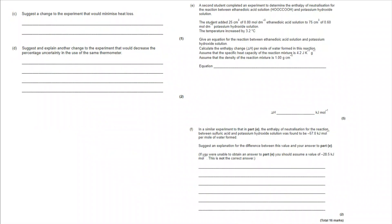Moving on with the rest of the question, suggest a change to the experiment that would minimise heat loss. Now, with anything like this, you're going to be thinking of insulation. It might be you're going to use a polystyrene cup instead of a glass beaker. You might talk about using a lid. Both of those do the same thing. If we minimise heat loss, we get a better idea of the actual temperature change.